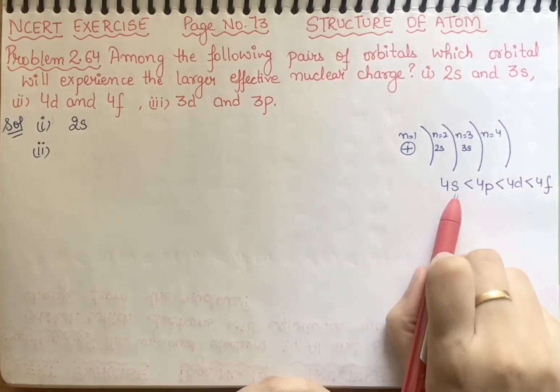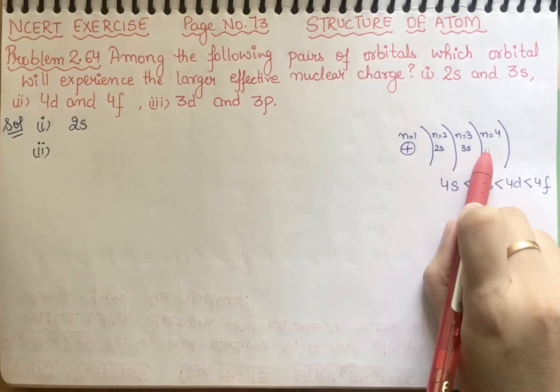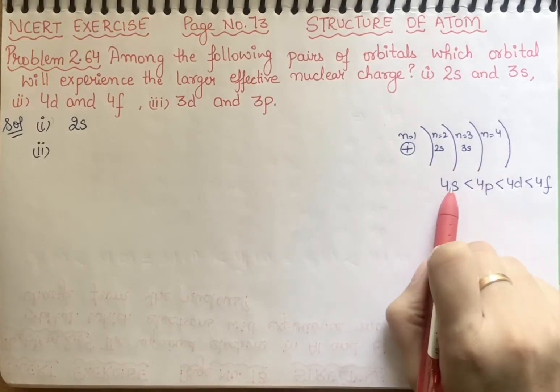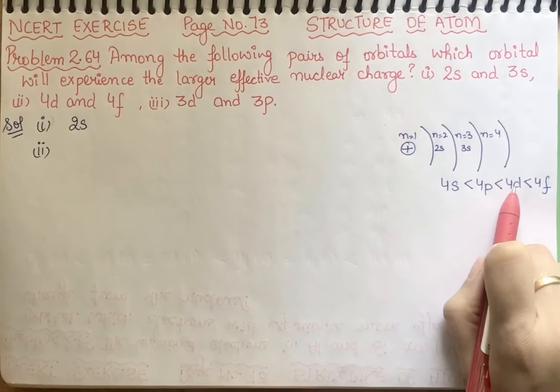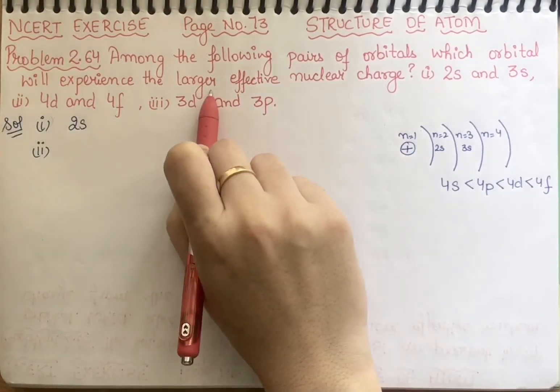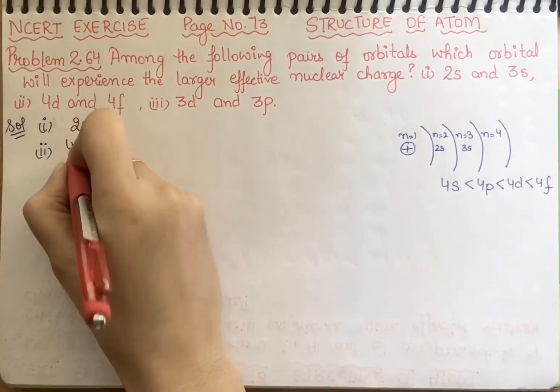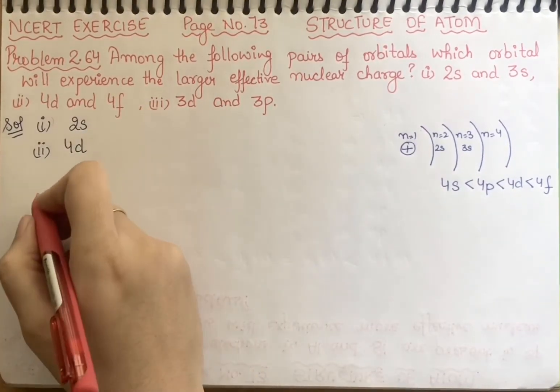It means that if I look at the orbit from this side, then which orbital will come? 4s, then 4p, then 4d, then 4f. So definitely nuclear charge will be more effective in 4d. So you are having 4d over here.